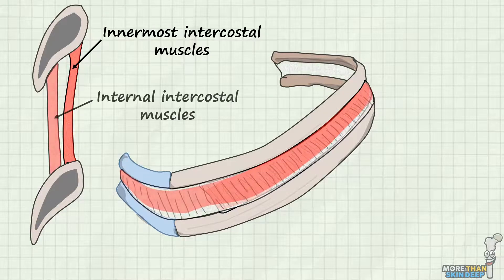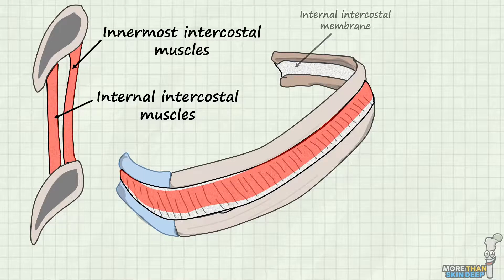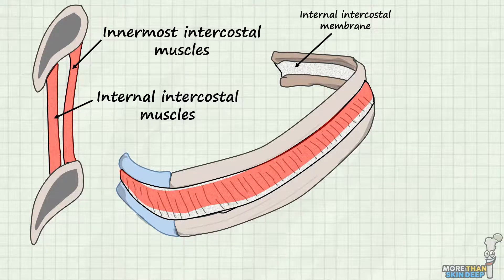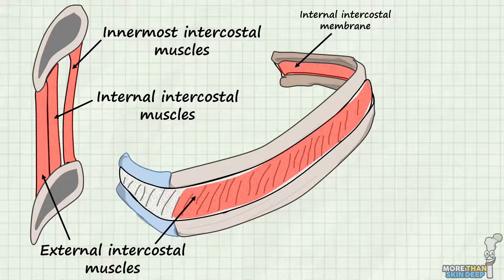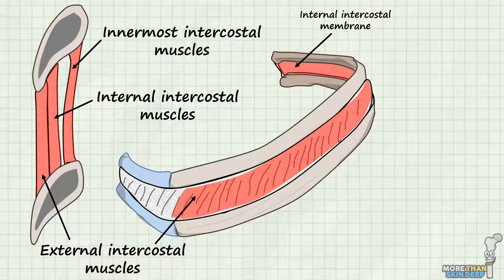The internal intercostal muscles are similar to the innermost intercostals and travel in the same direction. They go from the sides of the sternum to the angles of the ribs, ending as a thin aponeurosis known as the internal intercostal membrane. Lastly, we have the external intercostal muscles, which pass obliquely between the ribs from posterior to anterior, in the opposite direction to the innermost and internal intercostal muscles. They run between most of the posterior and lateral parts of the thorax before ending at the intercostal cartilages, where they produce another thin aponeurosis known as the external intercostal membrane.